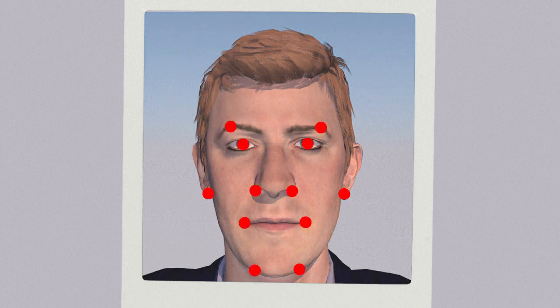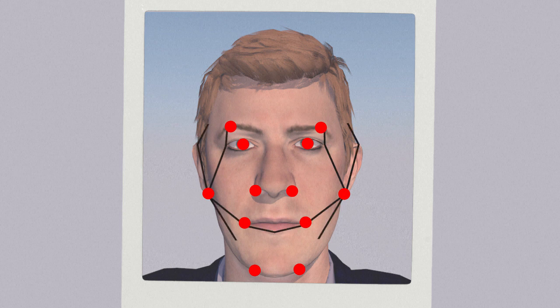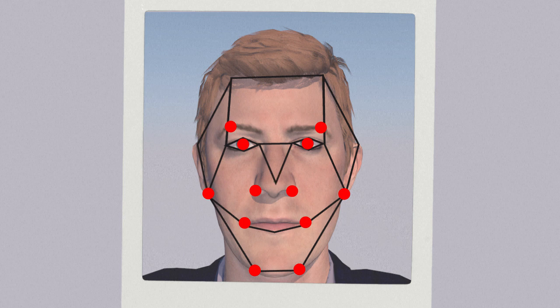These traits include the base of the ears, the distance between the two pupils, the shape of the nose, eyebrows and mouth, and even skin grain. Hair and clothes are not taken into account.